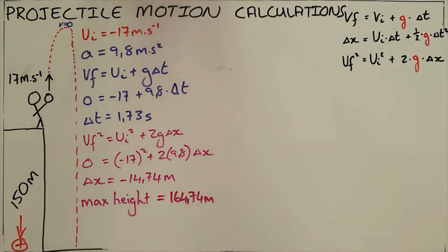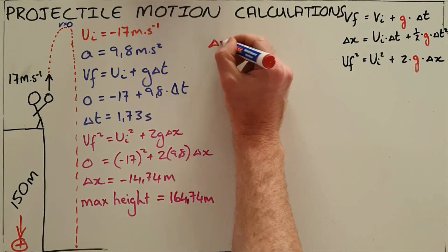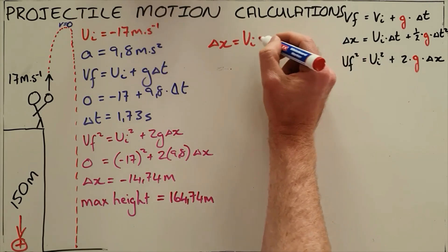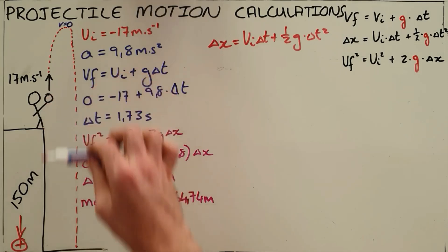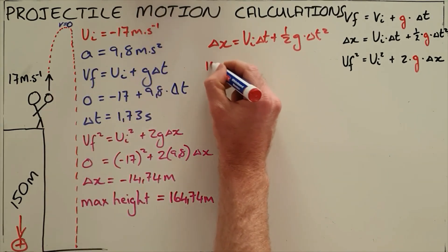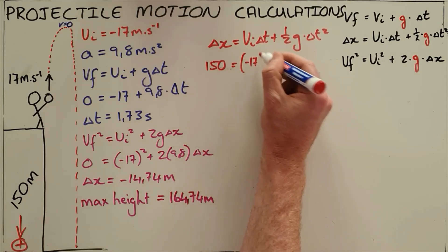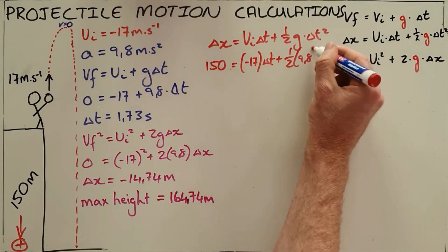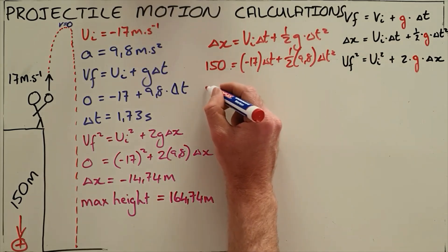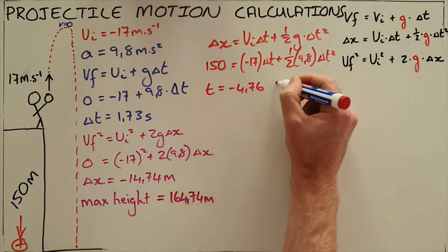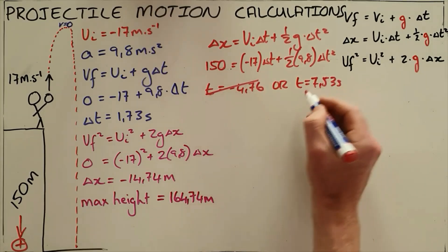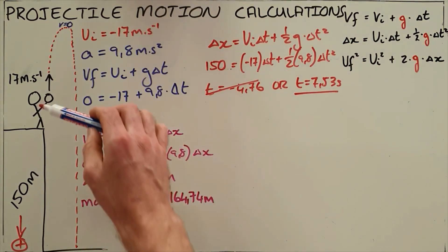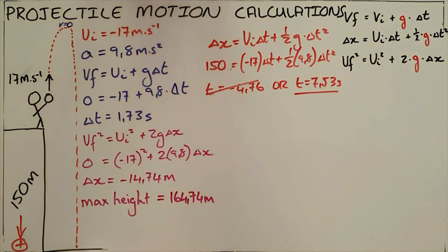To find the time to reach the ground, we note that the total displacement is 150 meters — the distance from launch point to the ground — regardless of the upward travel. Substituting values with correct directions gives a quadratic equation. Solving it yields two values: −4.76 seconds and 7.53 seconds. Since negative time is not valid, the object takes 7.53 seconds to hit the ground.